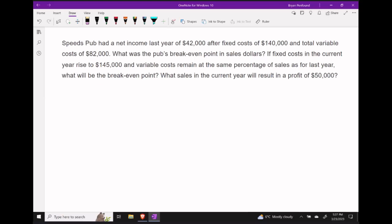Suppose that Speed's Pub had a net income last year of $42,000. This is after accounting for their fixed costs of $140,000 and their variable costs of $82,000.